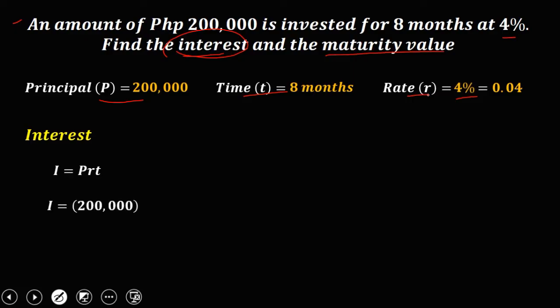So we have principal is 200,000 times the rate, that's four percent or 0.04. Now for the time, time should be in years, so we need to convert this eight months to years. And we know that in one year, that's equal to 12 months.